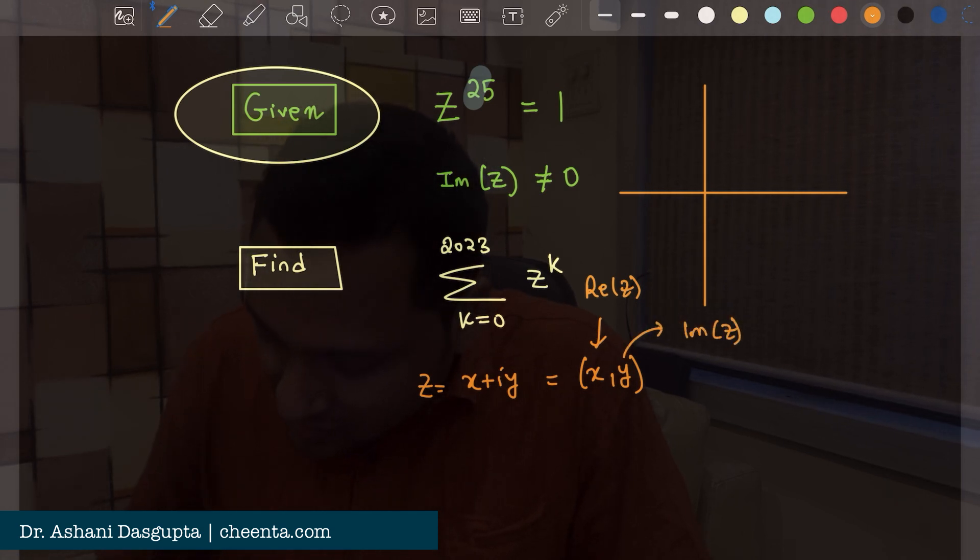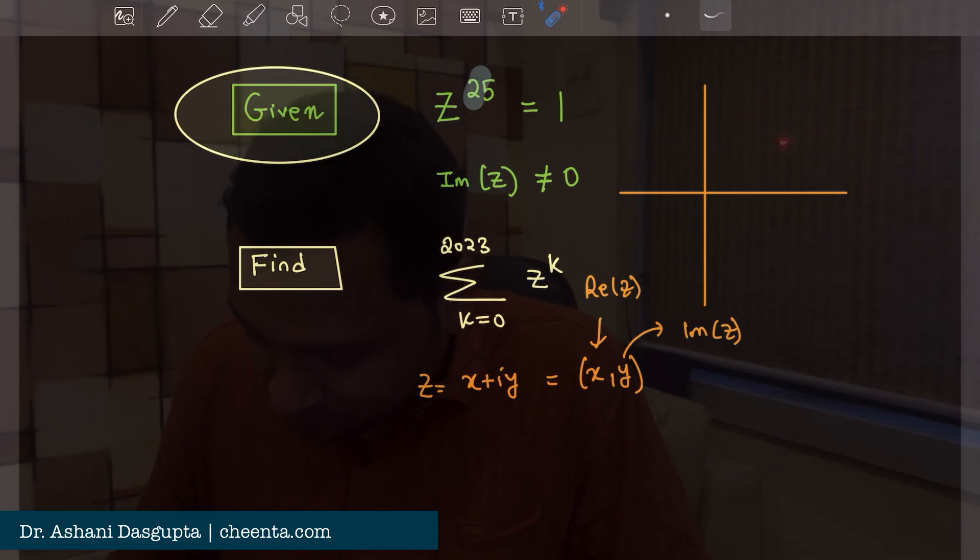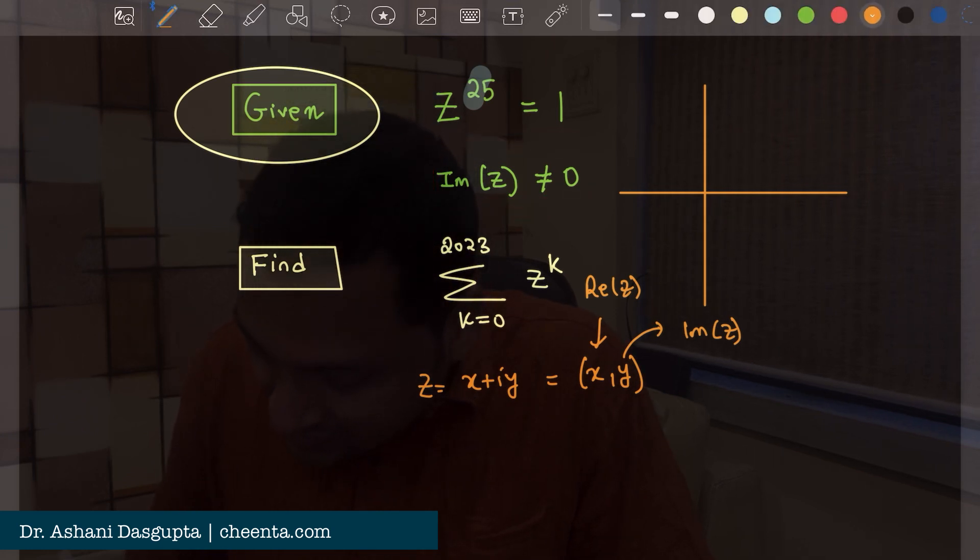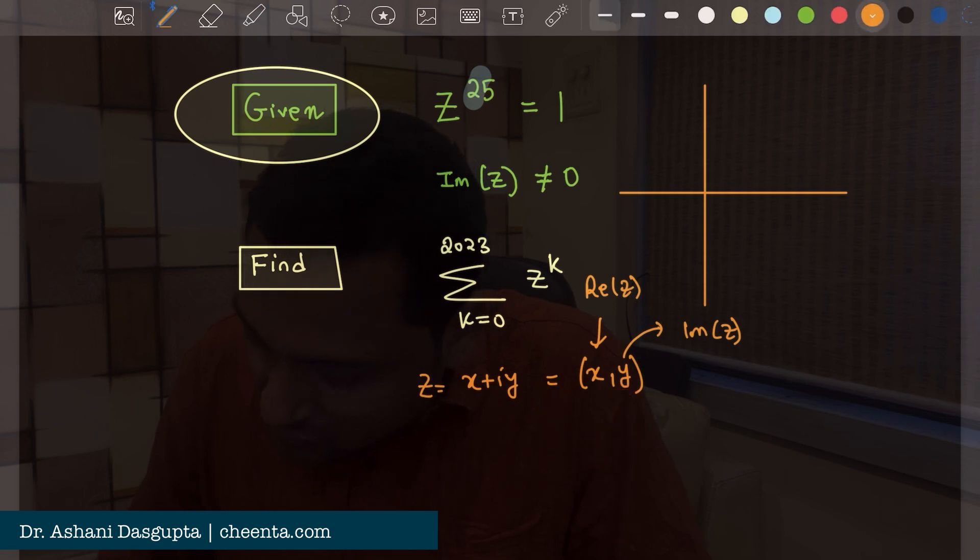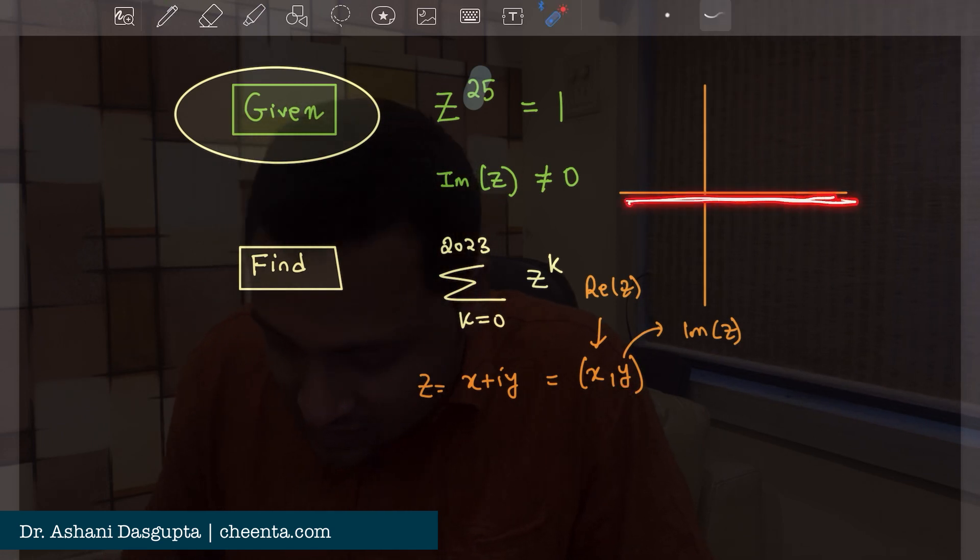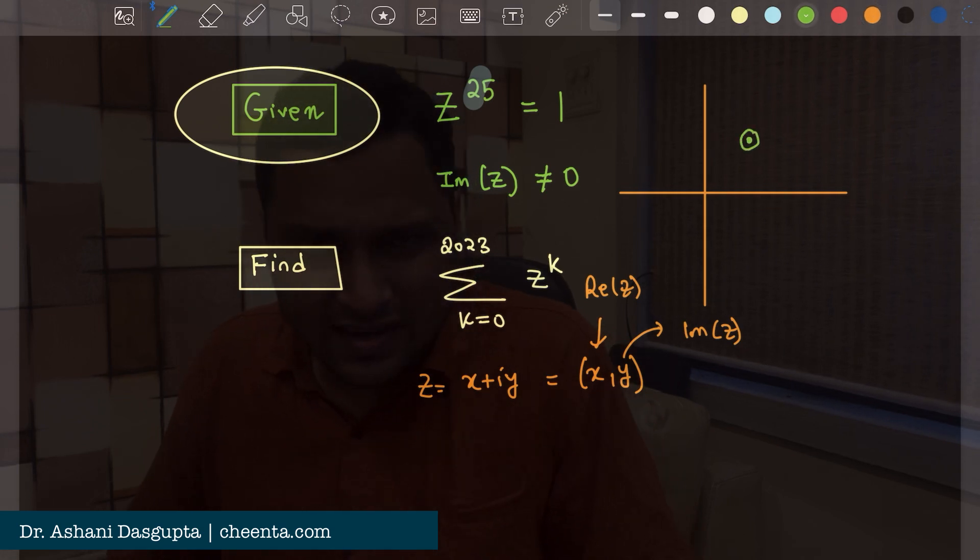So you can think of a complex number as a point on the plane. It's given that the imaginary part is not 0, which basically means that this y right here is not 0. So it's a point not on the real line on the x axis but it's a point in the plane.